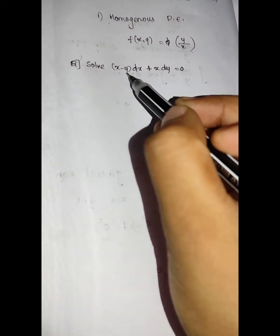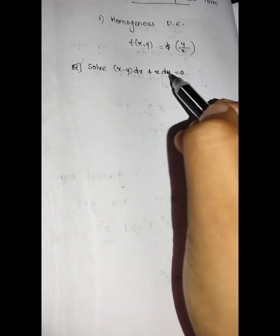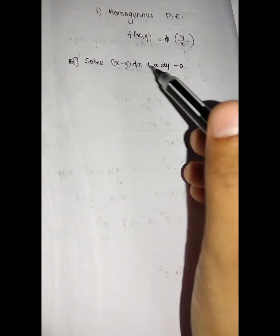Solve: x minus y dx plus x dy equal to 0. Let's separate this using the homogeneous method. We don't have a direct separate method here, so we will use this approach.